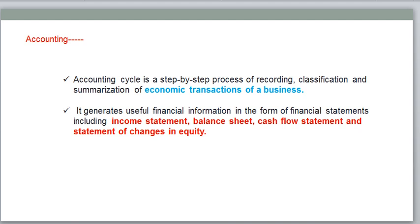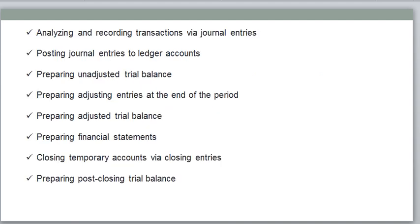Trial balance is just to know the arithmetical accuracy — whether all things are good, whether anything is missing. So those things we can find out initially. This is the accounting process cycle. First we need to analyze and record transactions via journal entries.